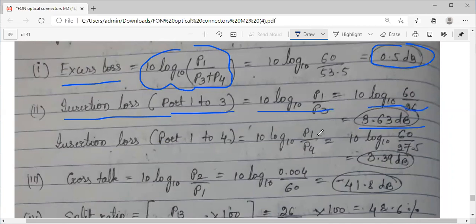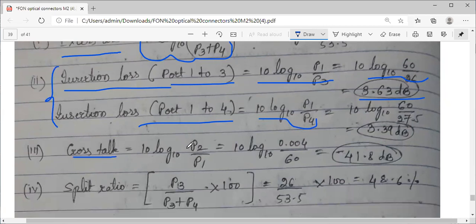You can calculate insertion loss two times: between one and four, and between one and three. P1 by P3, you can verify with your calculator. Similarly, for insertion loss between first and fourth port, it is P1 divided by P4.